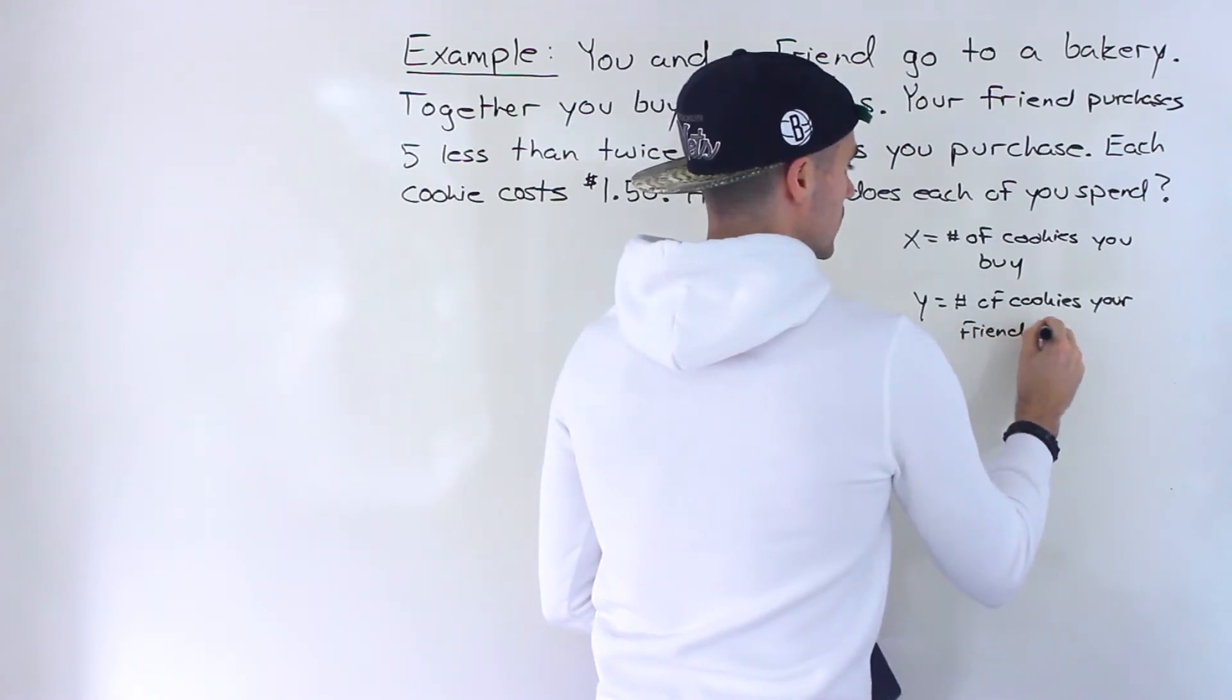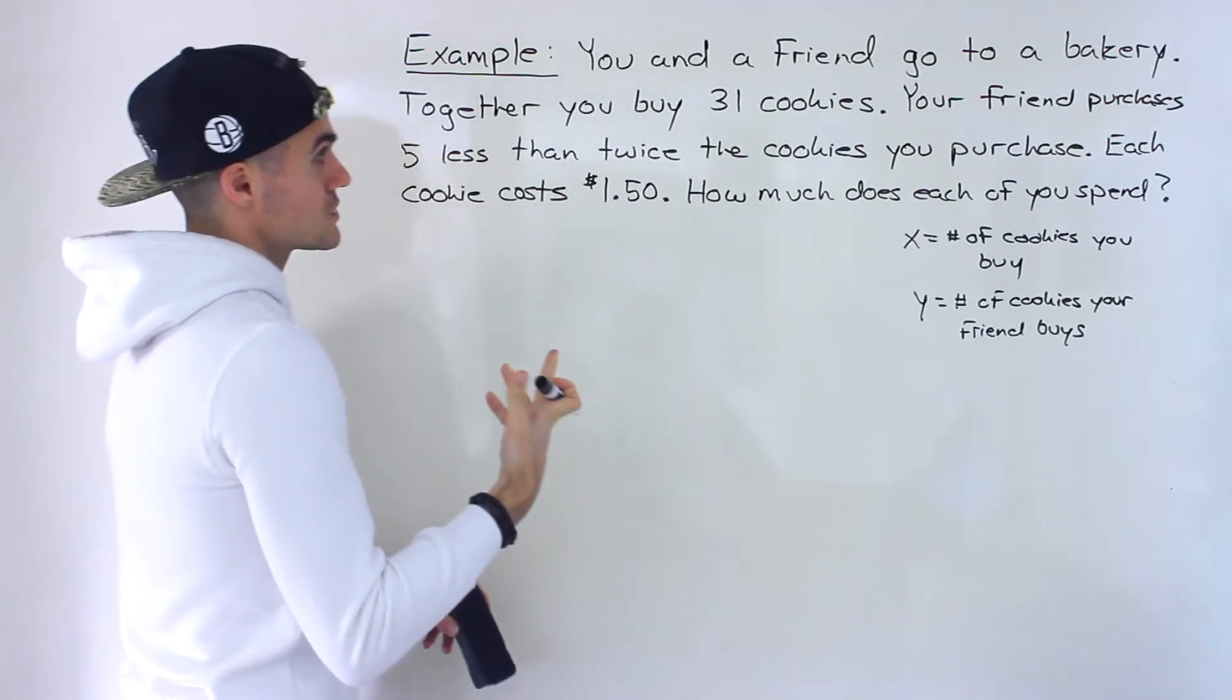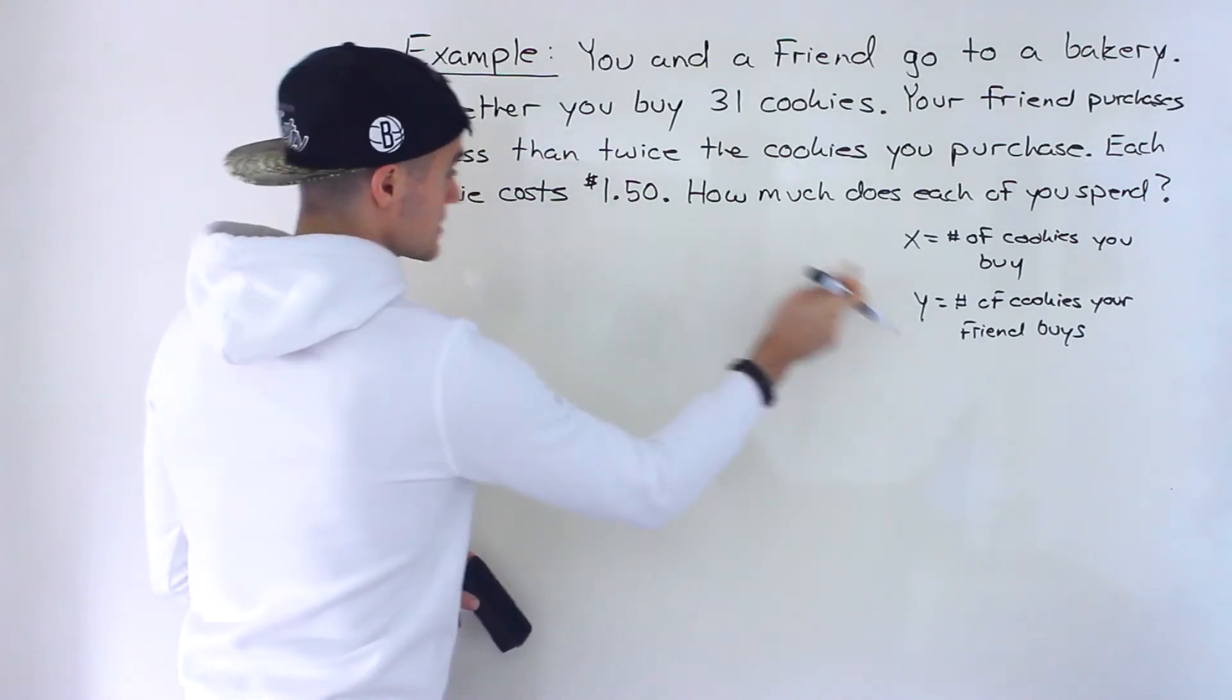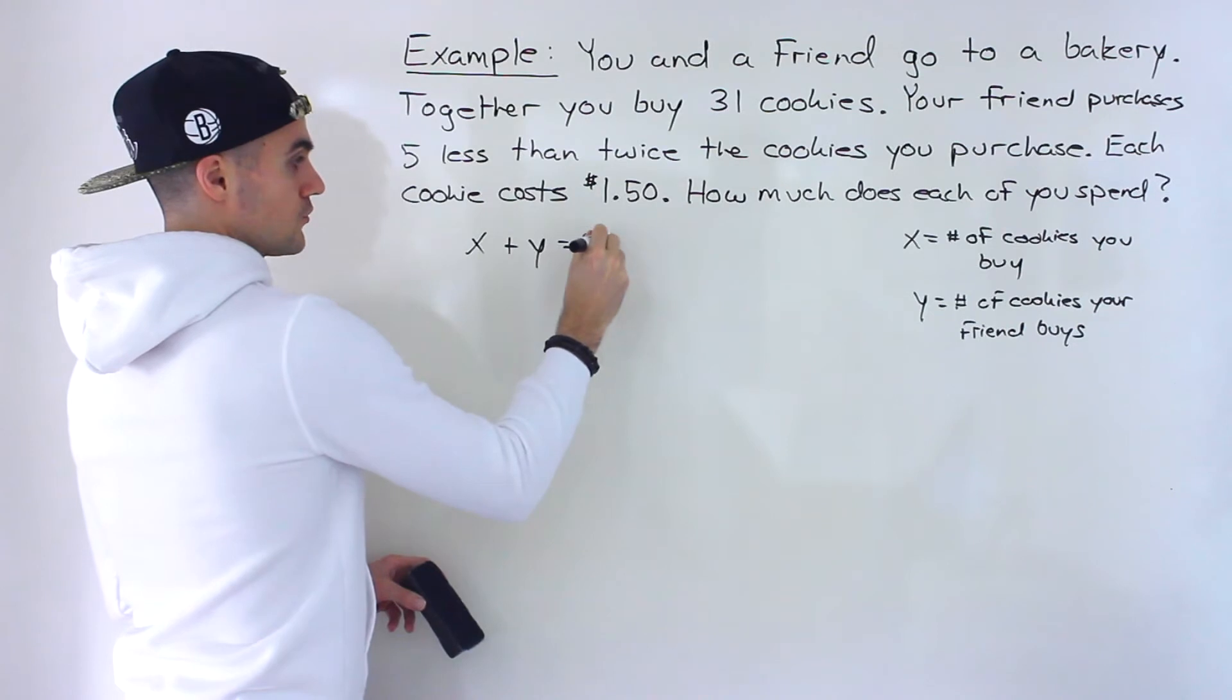And let's see what kind of equations we can create with the information that we're given. So we're told that together you buy 31 cookies. So in total, there's 31. So basically, the sum of these, we'll have x plus y is equal to 31.